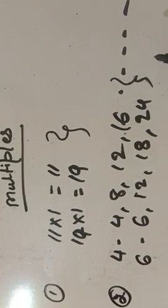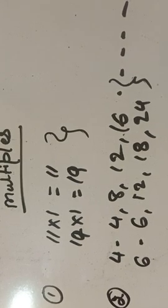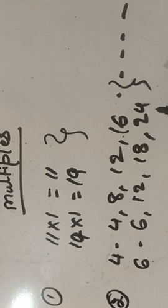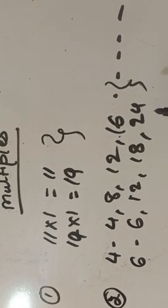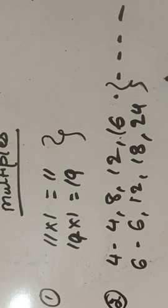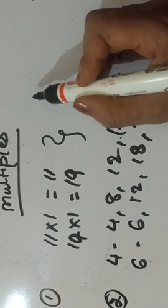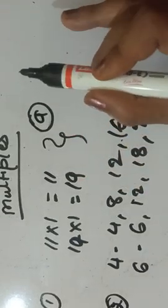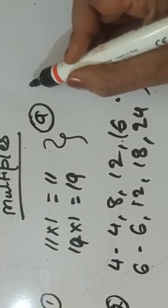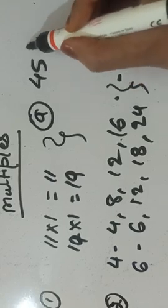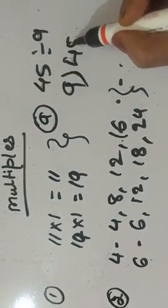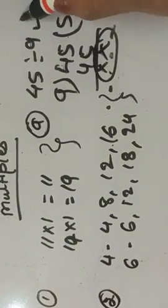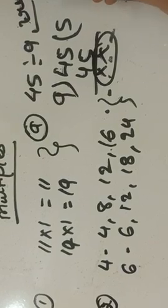Now I am going to start exercise 6.2. Look carefully in your book. Question number 1 is: write true or false for the following statements. For example, '5 is a multiple of 9.' To check, you know the table of 9; in the 9 times table, 5 times gives 45, and 45 is fully divided by 9, so it is true. Like that, you will do question number 1.